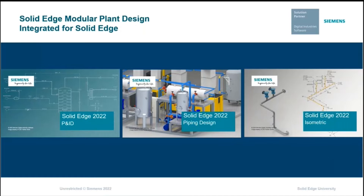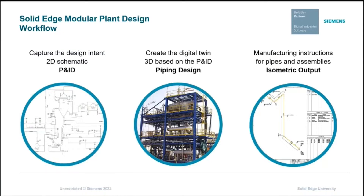We will dive deeper into those now and will first mention the technology. There are three steps to the modular plant design workflow: plan, communicate, and then manufacture. We capture the design content in a schematic using P&ID. Information is communicated to the 3D environment, making sure everything works together and fits together. The third step is the isometric output, so the fabrication piping drawings are created for the shop to manufacture.